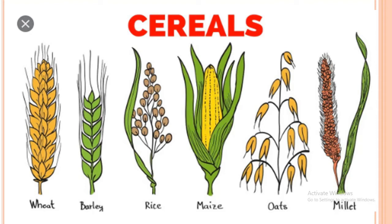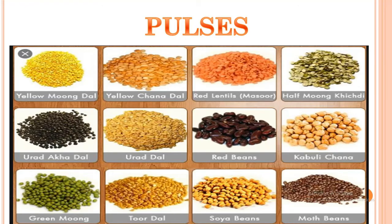Cereals — wheat, barley, rice, maize, oats, millet — all these are cereals that we get from plants. We also get pulses from plants, such as moong dal, chana dal, kabuli chana, and red beans. These are the pulses we get from plants.